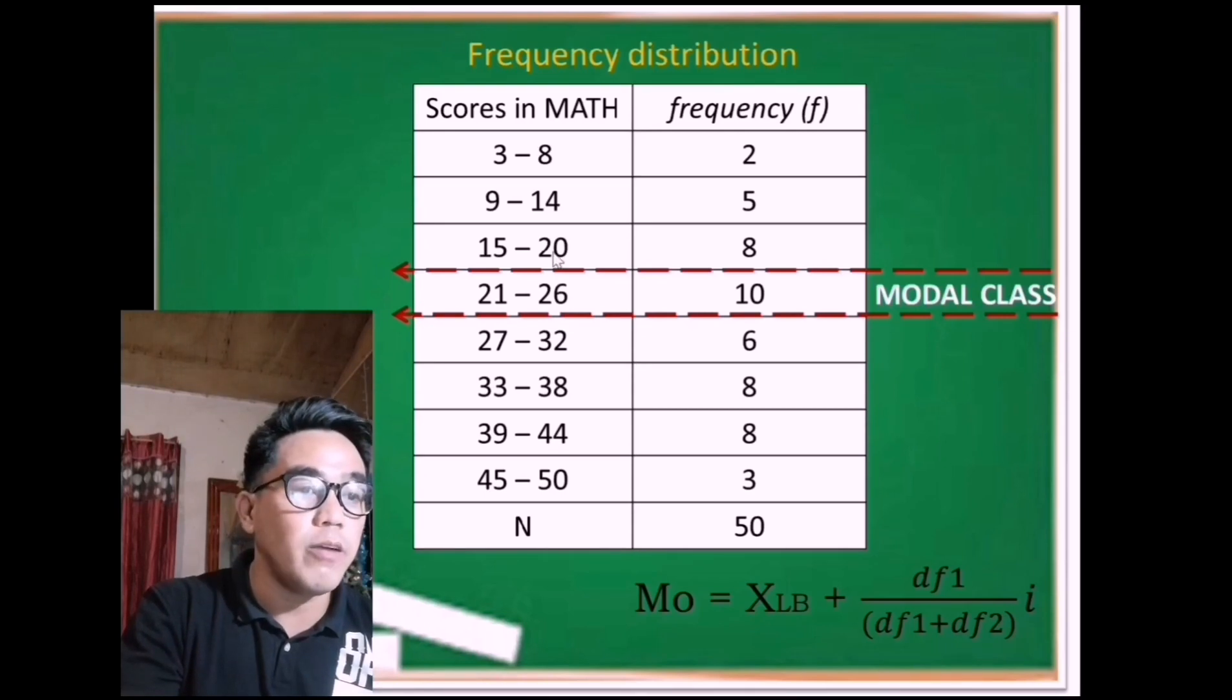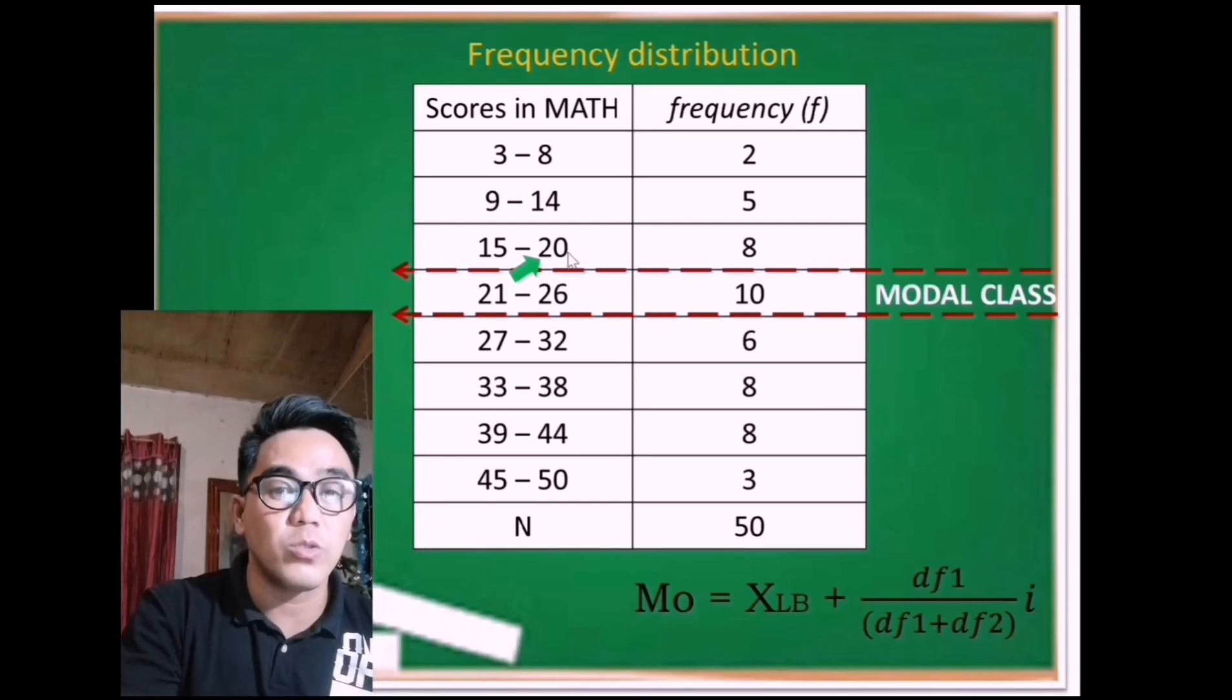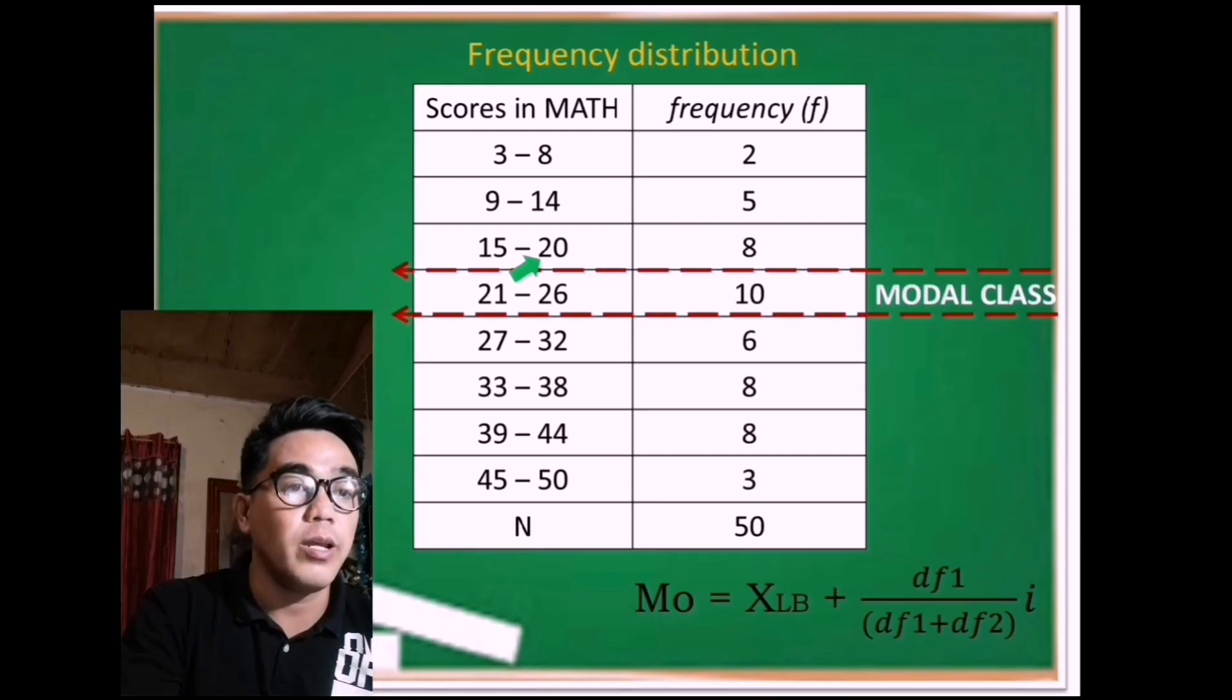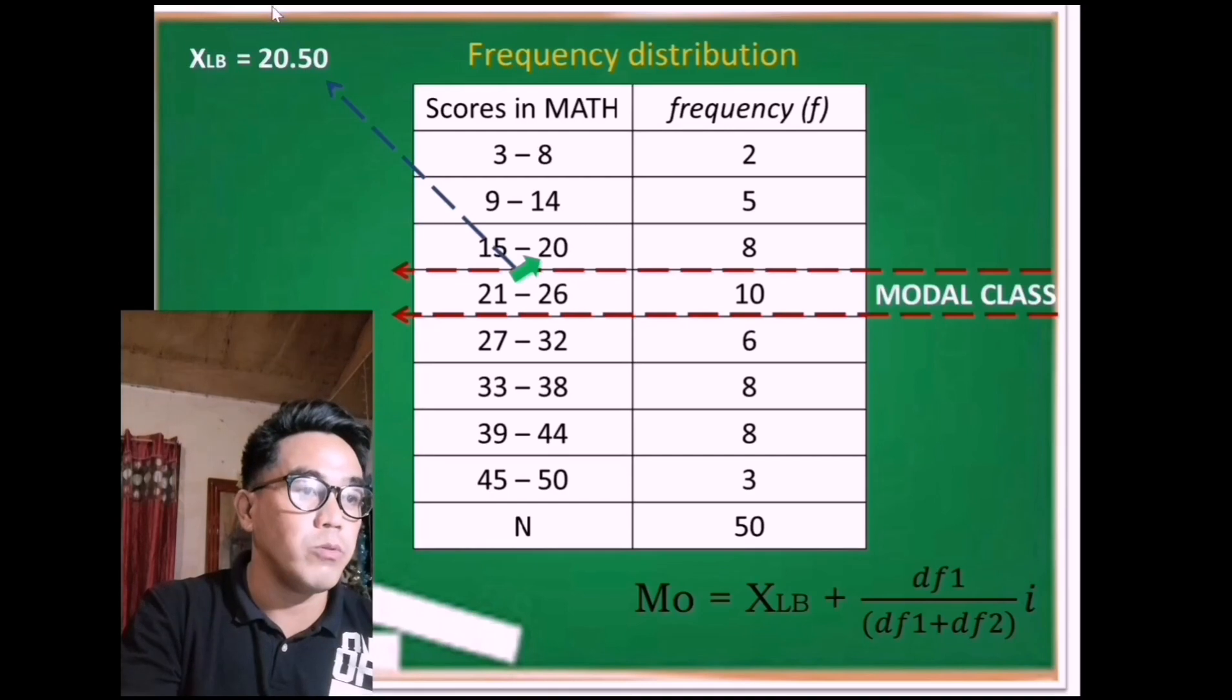Therefore, we're going to get the average of 21 and 20. We add it and divide it by 2. 21 plus 20 is 41 divided by 2 is 20.5. Therefore, this is now our XLB or the lower boundary.